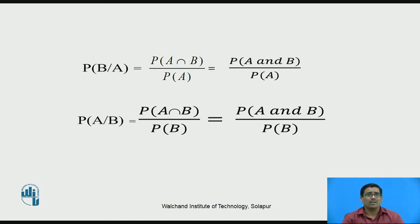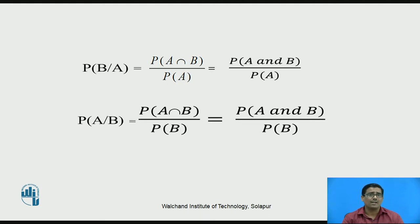Therefore, in mathematical formula, the conditional probability P(B|A) — conditional probability of B given the occurrence of A — is equal to probability of A intersection B divided by probability of A, that is P(A and B) divided by P(A). Similarly, the probability of A given B is equal to probability of A intersection B divided by probability of B, that is P(A and B) divided by P(B). This is the basic formula for conditional probability, which we use for solving problems.